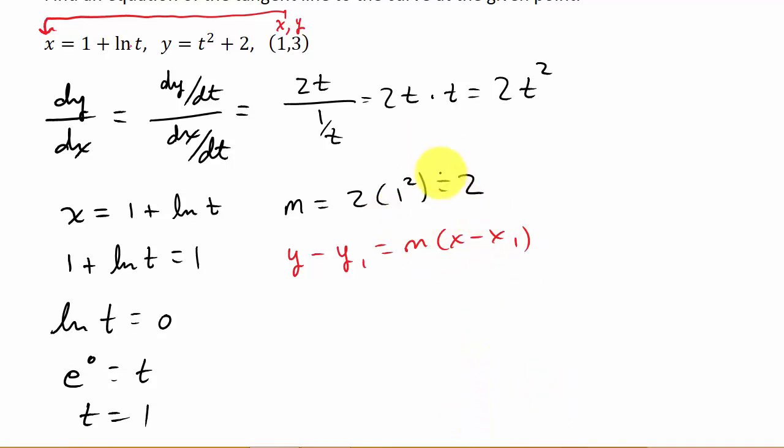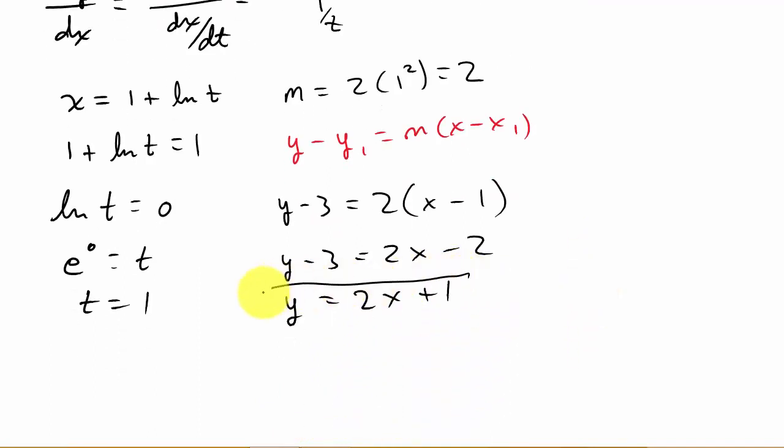Now we can use the point slope form, y minus y1 equals m times x minus x1. I have my slope and I have a point on the line. So I get y minus 3 is equal to 2 times x minus 1. And so y minus 3 is 2x minus 2. So y is equal to 2x plus 1, and this is the equation of the tangent line.